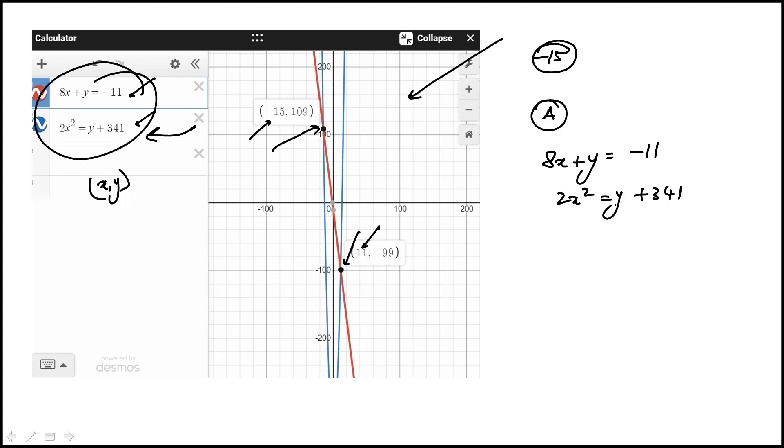So 2X² = Y + 341, and that means Y = -8X - 11. Substitute that here and that becomes 2X² = -8X + 330.